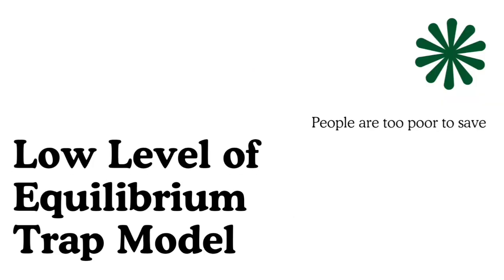The next is the low level equilibrium trap model. In one phrase: people are too poor to save, and without savings there is no investment and no production. This concept was developed by Richard R. Nelson, in which at low levels of per capita income people are too poor to save and therefore cannot invest much, and this low level of investment results in a low rate of growth in national income. What is required is a quantum leap above this minimum per capita income, so that the level of savings can rise and bring about economic growth.